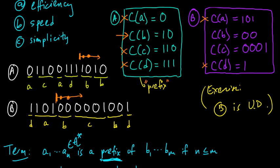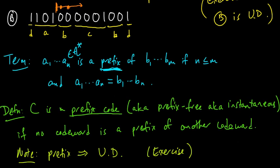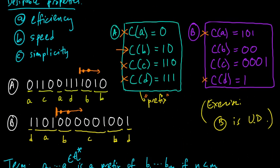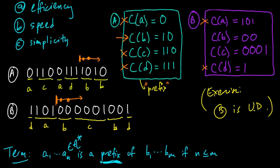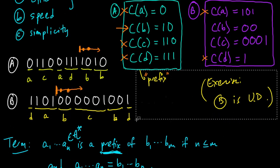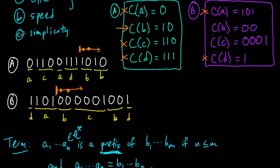Okay, so one way to think about this, that condition that we were, that made A desirable was this prefix condition. Another way to think about the same thing, the prefix condition, is by thinking about this, these codes as trees. So maybe, where can I draw the tree? Let me make a little space here. Let me make some space right here. Let's draw a tree for A here.